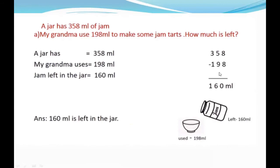So if I subtract 198 from 358: 8 minus 8 is 0. I cannot do 5 minus 9, so I borrow from here. It will be 15 and this will be 2. So 15 minus 9 becomes 6, and 2 minus 1 is 1. That means 160 milliliters of jam is left with us.